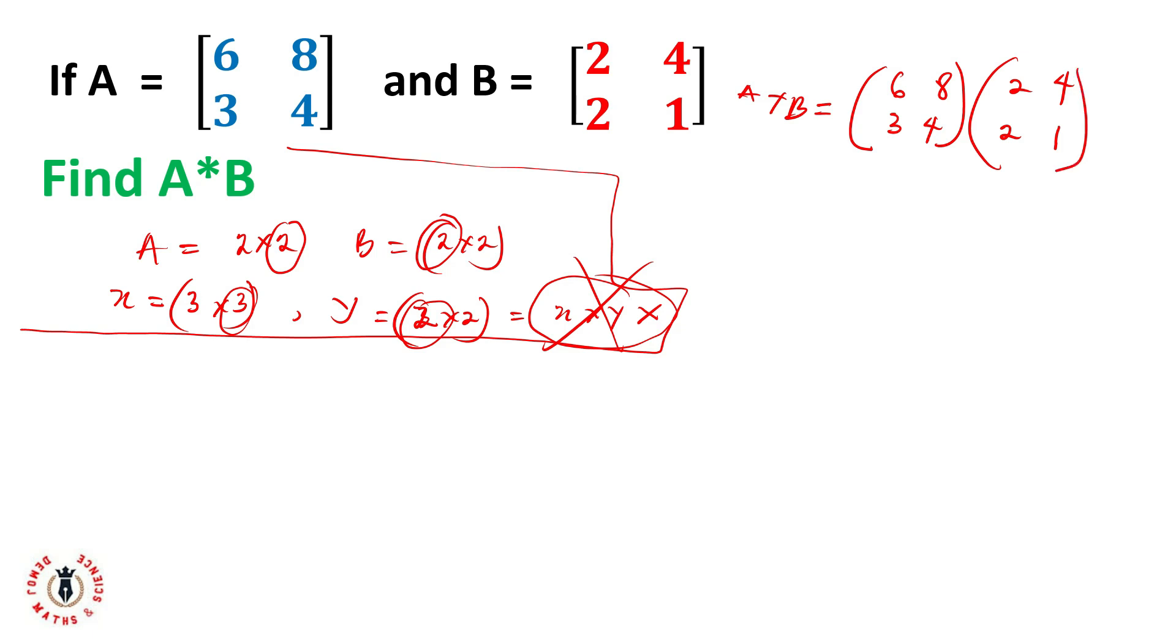Let's open these brackets and expand the matrix. So it's going to look like 6 will multiply 2, so I have 6 times 2 plus 8 times 2. Then 6 and 8 again will multiply 4 and 1, so it becomes 6 times 4 plus 8 times 1. 3 and 4 will multiply 2 and 2, so it becomes 3 times 2 plus 4 times 2. And 3 and 4 again to multiply 4 and 1, so this should look like 3 times 4 plus 4 times 1.